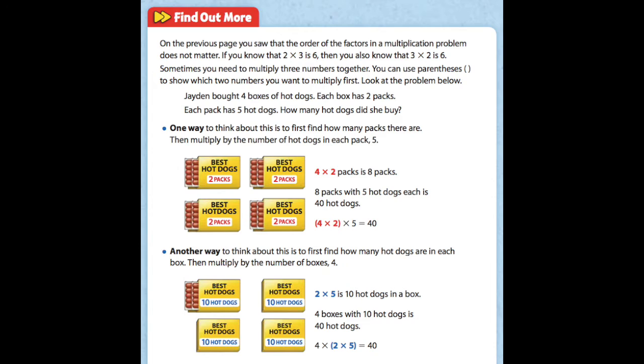So then we know that there are 10 hot dogs in each of the boxes. Now all we have to do is multiply 10 times 4, which is our boxes, and we know whenever we multiply anything by 10, we just add a 0 to it. So 4 times 10 is 40 hot dogs.